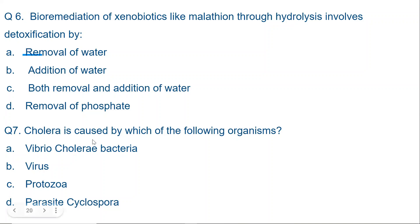Question 7: Cholera is caused by which of the following organisms? A. Vibrio cholerae bacteria. B. Virus. C. Protozoa. D. Parasitic Cyclospora. The correct option is A — Vibrio cholerae, which is a bacterium.